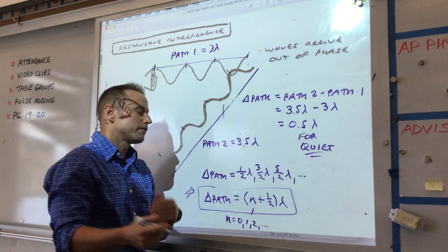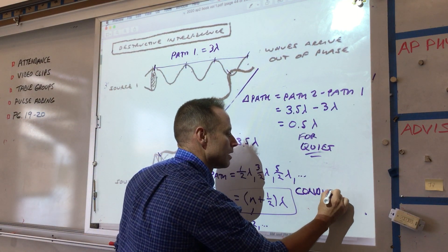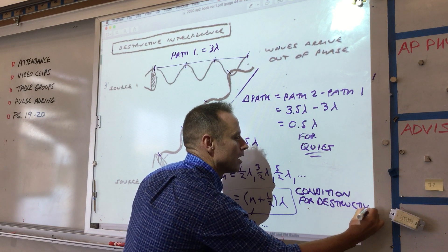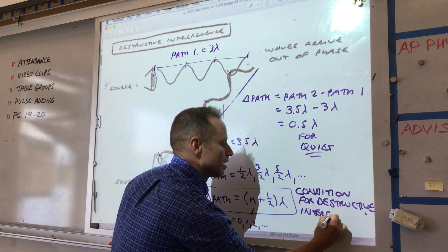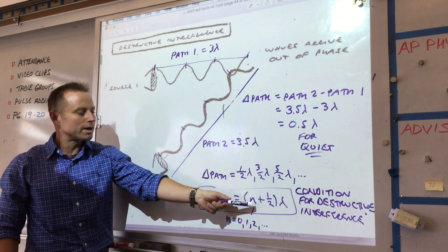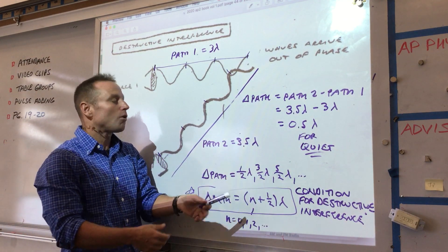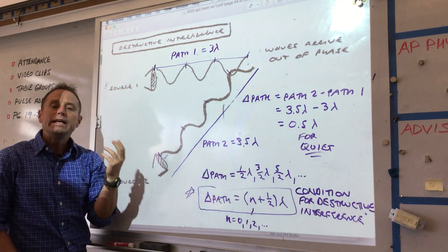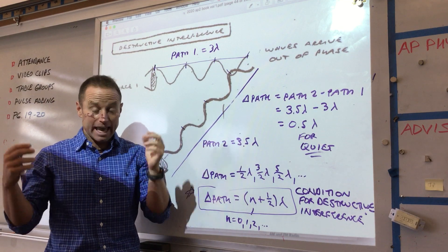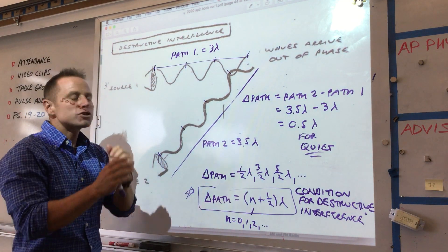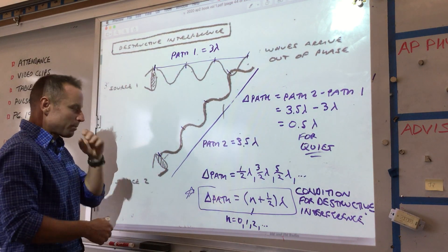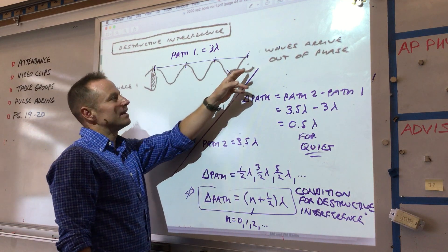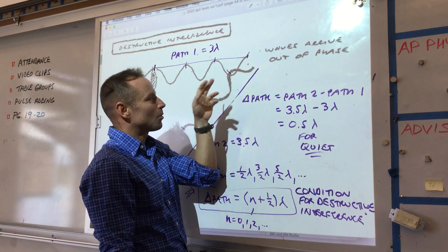This is the most important condition in this unit — for destructive interference or quiet sound. Students sometimes ask which value of n applies — the answer is all of them. There are a whole bunch of locations where the speaker conspires to make it quiet. There's also a whole continuum in between the extremes: if the path difference were 0.498 wavelengths instead of exactly 0.5, it would almost cancel — pretty quiet, but not perfectly quiet.